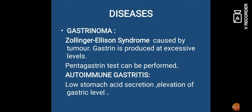Diseases: सबसे पहले gastrinoma — जब excessive level में gastrin produce होने लगता है, तो tumor हो जाता है, जिसको gastrinoma कहते हैं, जिसको Zollinger-Ellison syndrome भी कहा जाता है। इसके लिए pentagastrin test किया जाता है। इसके बाद autoimmune gastritis, low stomach acid secretion, elevation of gastrin level — यह हैं gastric hormone के disorders।